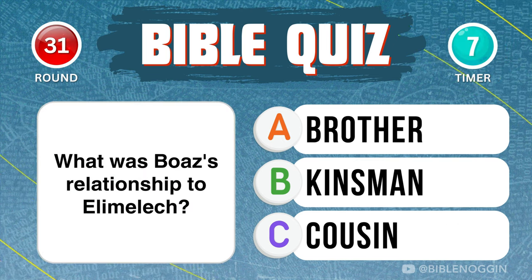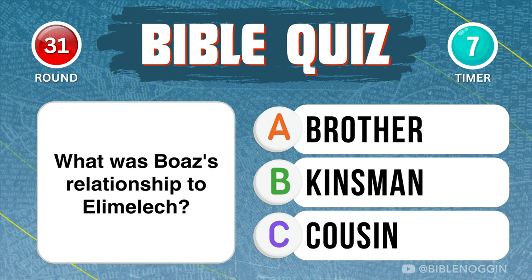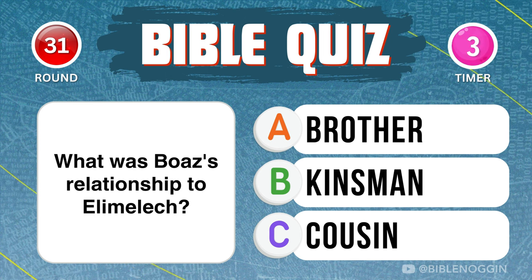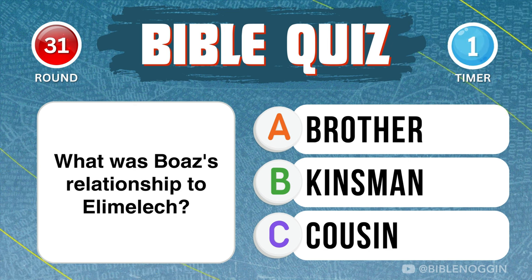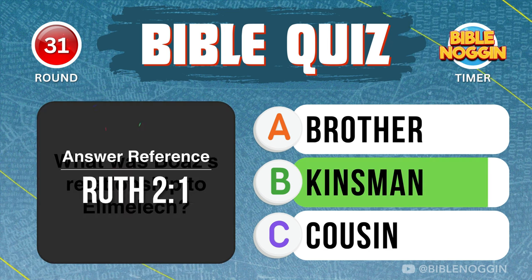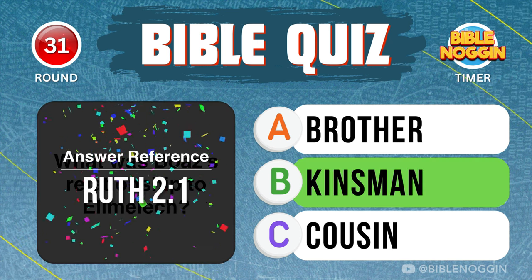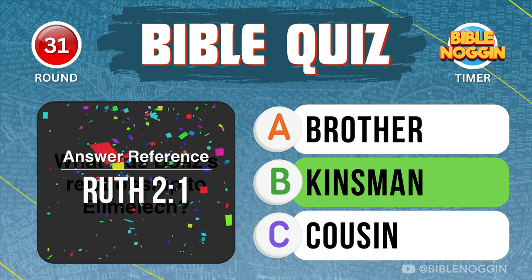Question 31: What was Boaz's relationship to Elimelech? He was a kinsman — found in Ruth chapter 2, verse 1.